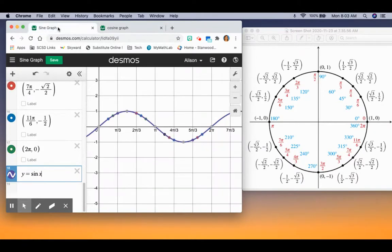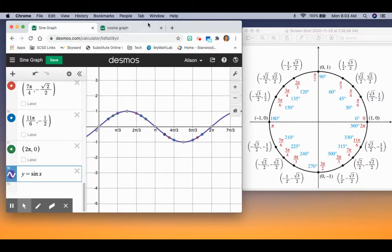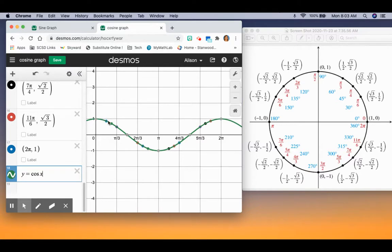Sine and cosine are the same graph with a shift. Sine starts in the middle of the graph, goes up, back to the middle, down, and ends at zero. Cosine starts up at one, goes down to its lowest point halfway in between, and ends up at one again.